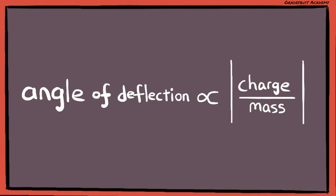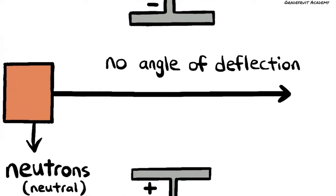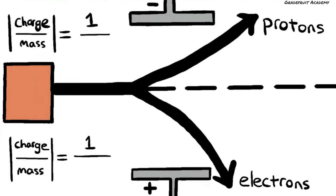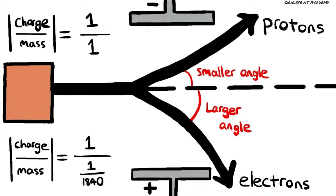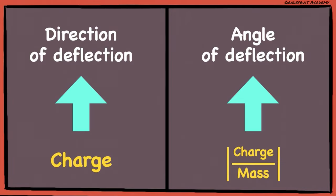When we consider these two factors, we can determine the angle of deflection. For neutrons, since they are neutral, they won't be deflected at all, so there is no angle of deflection. For protons and electrons, examining their charge-to-mass ratio: both have the same charge magnitude of 1. Since the relative mass of a proton is 1, while the relative mass of an electron is much lighter at 1/1840, electrons will be deflected with a larger angle. To sum up, the direction of deflection depends on the charge of the particles, and the angle of deflection depends on the magnitude of the charge-to-mass ratio of the particle.